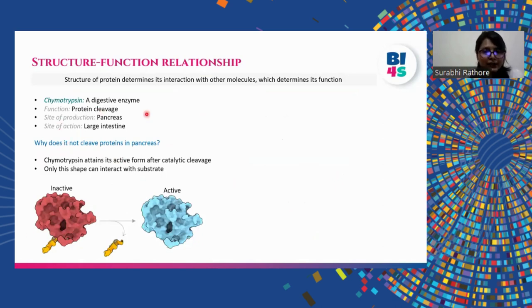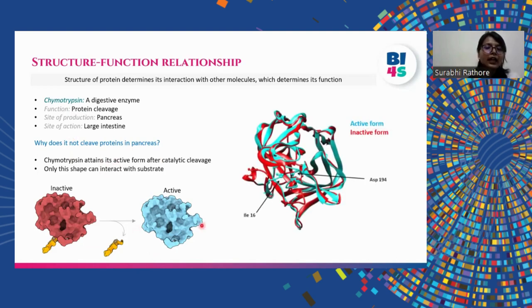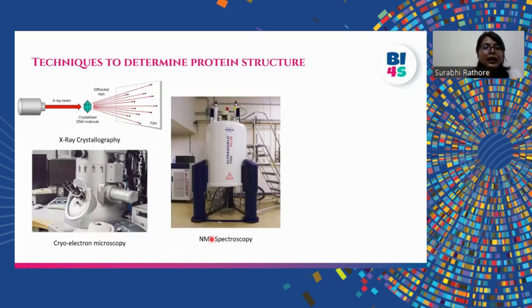One such example to understand this structure-function relationship of a protein is the digestive enzyme known as chymotrypsin. This digestive enzyme's function is to cut other proteins. It is interesting to note that the production site of this enzyme is in pancreas while the site of action is in large intestine. So, one may ask why does it not cleave the proteins in the pancreas? This is because for chymotrypsin to get active, a cut is required which removes one small region from the protein and makes it active. Now, this active form of the protein can further degrade other proteins.